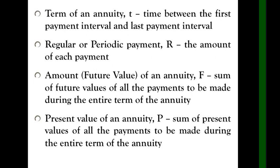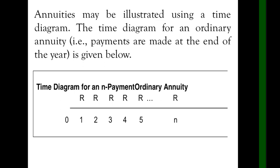Annuities may be illustrated using a time diagram. Here is a sample time diagram for an annuity. The time diagram for an ordinary annuity where payments are made at the end of the year is given below. We have zero, which is when you borrowed, for example. Then first month you will pay, second month, third period, fourth, fifth, until the end when the term finishes. One, two, three can be months, quarters, semi-annually, or yearly.